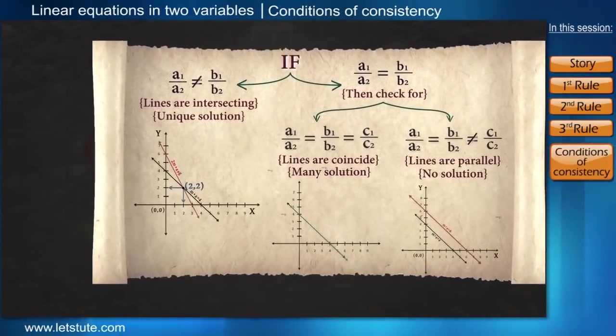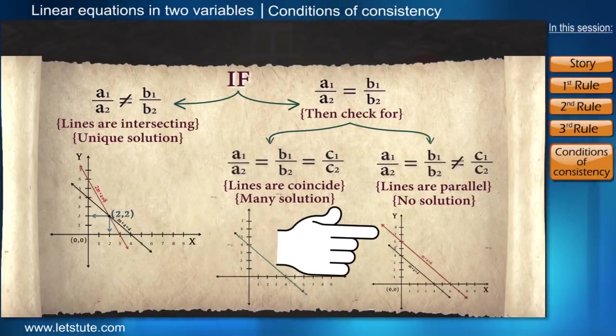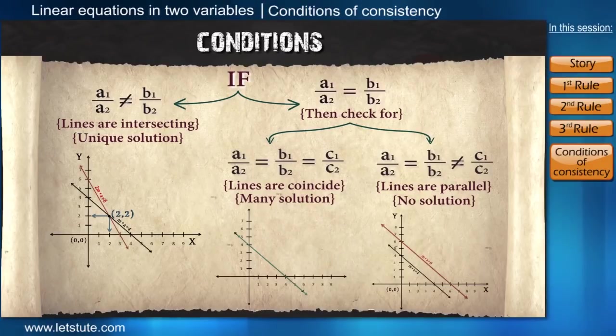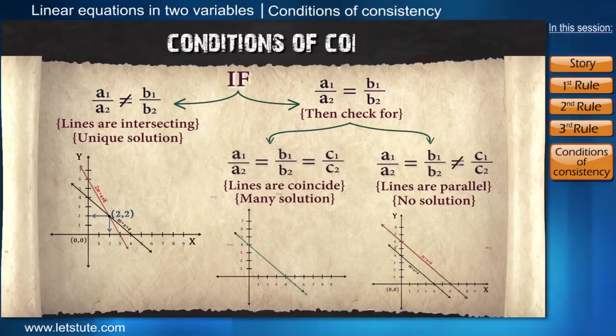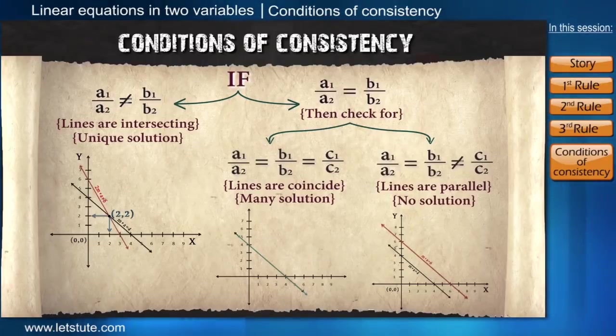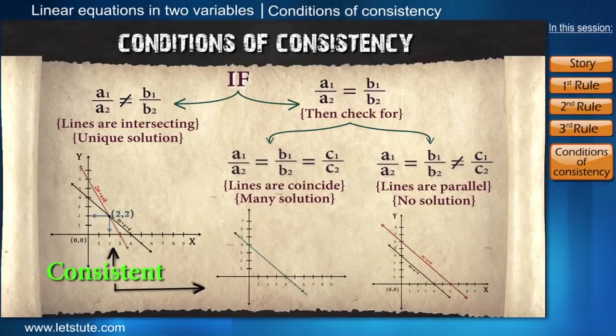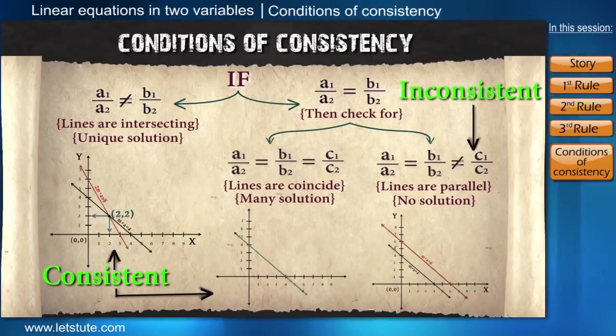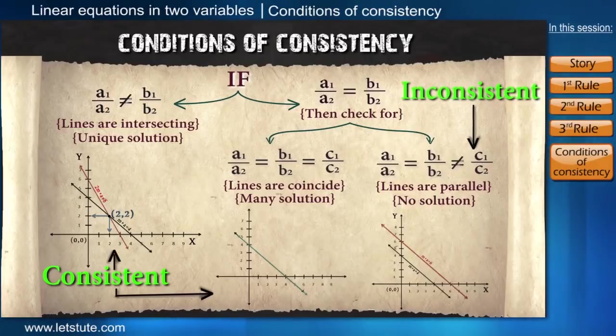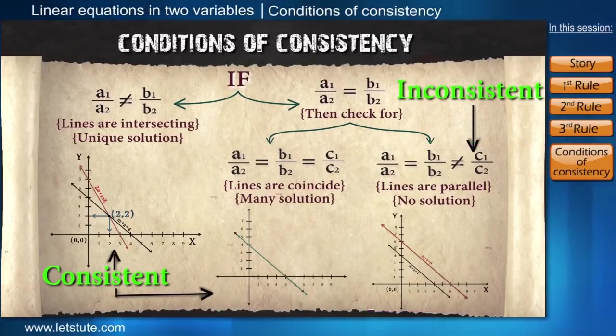Friends, these are the conditions to check whether lines are intersecting, overlapping or parallel. And these conditions are called conditions for consistency. It means whenever solutions exist, whether it is unique or many, equations are said to be consistent and it will be inconsistent only if there does not exist any solutions. Means only in the case of parallel lines.